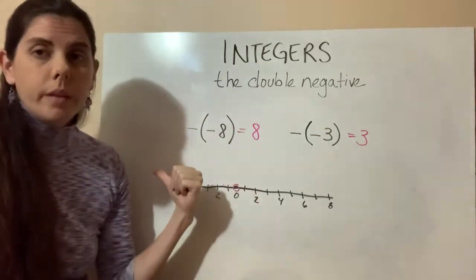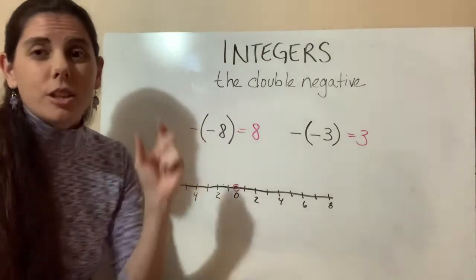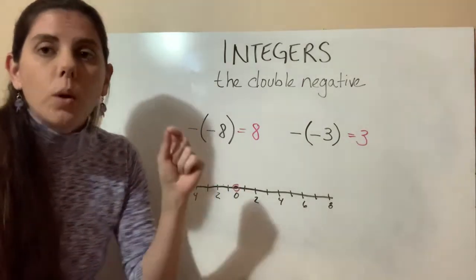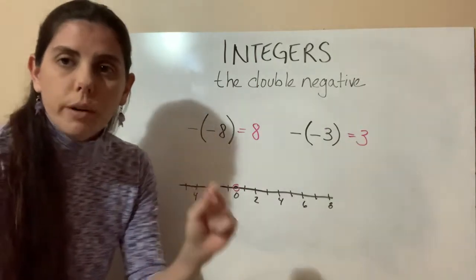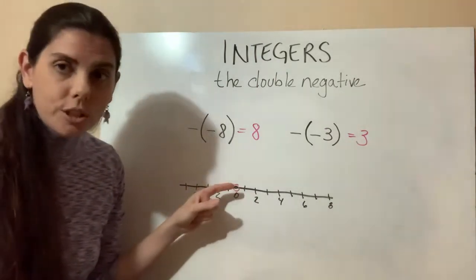Since it's a negative, we know we're going to go to the left. Another way to look at these negative signs means it's a change in direction. So what's the natural direction to go on the number line? The natural direction to go on the number line is to the right.